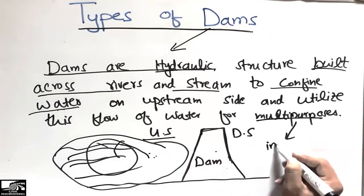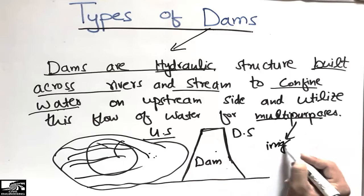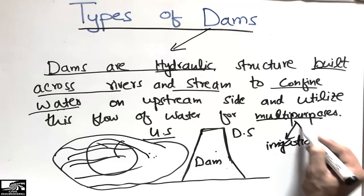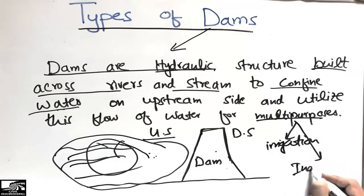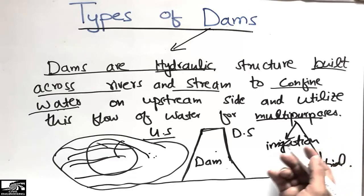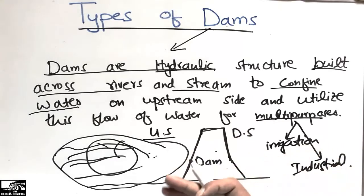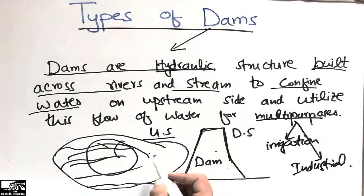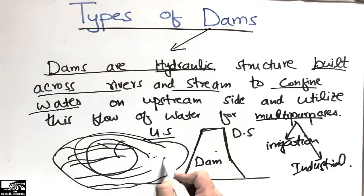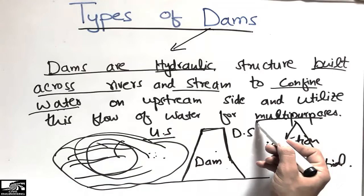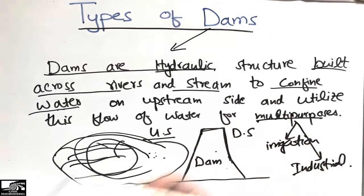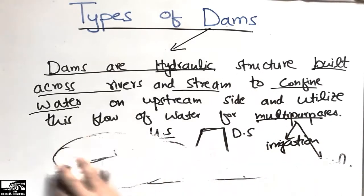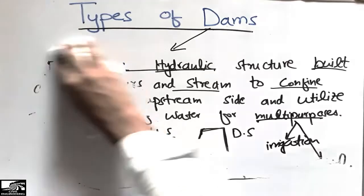The water stored on the upstream of the dam is used for different purposes: for irrigation purposes, for industrial purposes, for hydro-electric purposes, for recreation purposes, and various other purposes. This is the definition of the dam. Now let's come to the different types of dams according to various classifications.